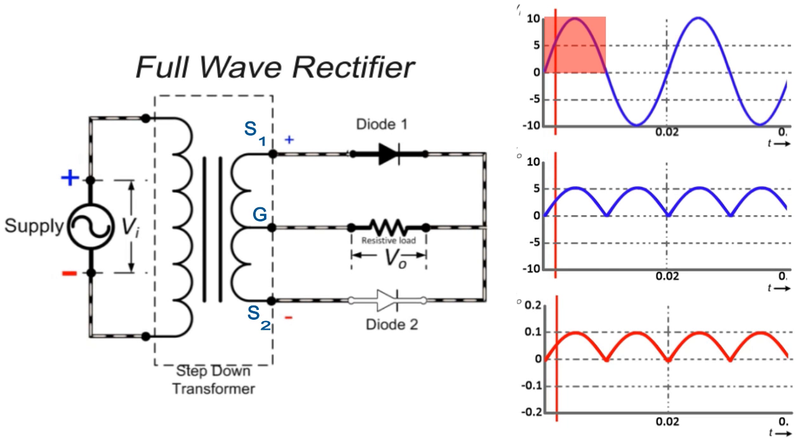For the positive half of the AC signal, the secondary terminals, S1 is positive, ground point will have zero volts, and S2 will be negative. At this instant, diode D1 will be forward biased and the diode D2 will be reverse biased.